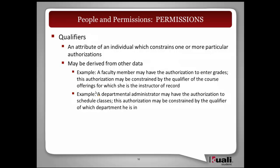Qualifiers are really an attribute on a person which would constrain the authorization. For example, a faculty member may be allowed to enter grades based on their role, but you want them only to be able to enter grades for courses for which they are the instructor of record. Another example: if you're authorized to schedule classes, the authorization needs to be constrained to only classes for your department. There's also the concept of a negative qualifier — for example, I can update academic records based on my authorizations, but you wouldn't want me to have the ability to update my own personal record.